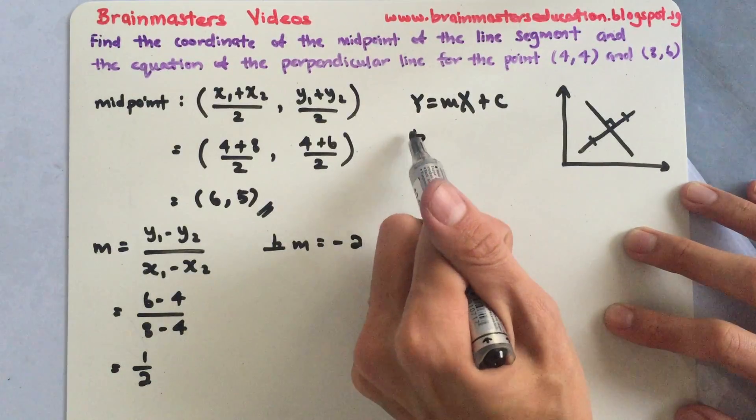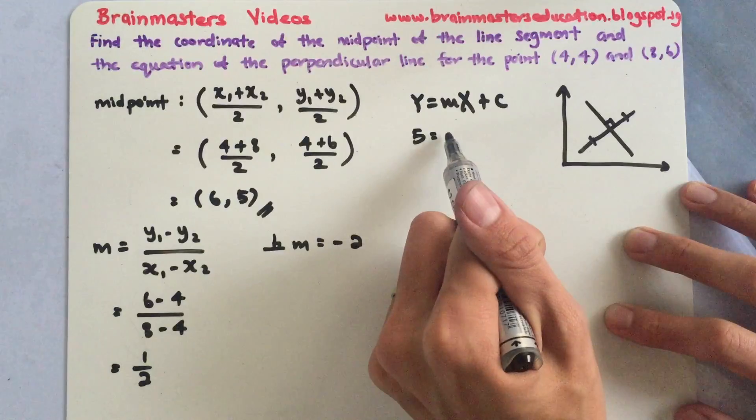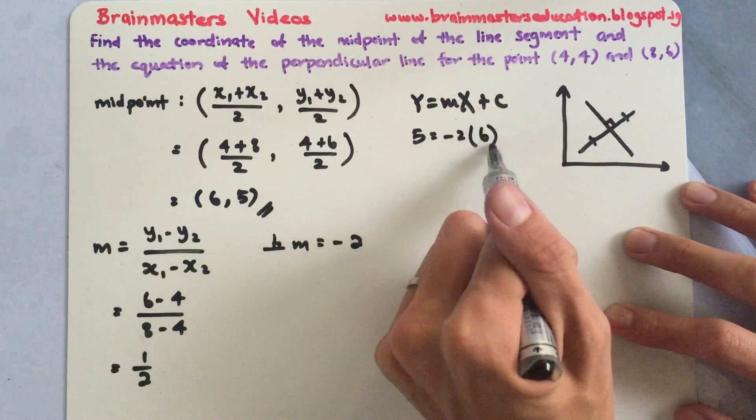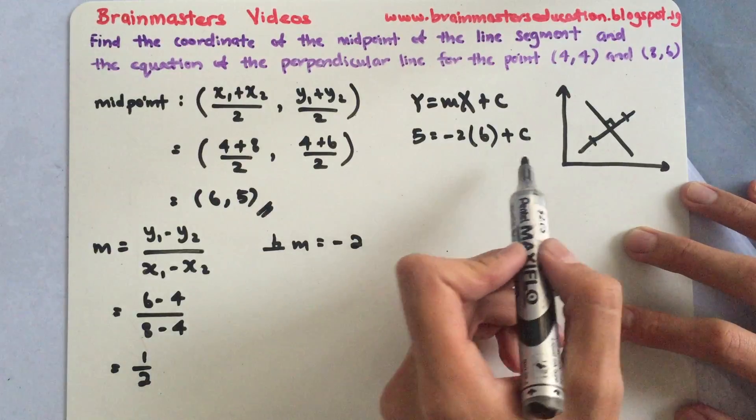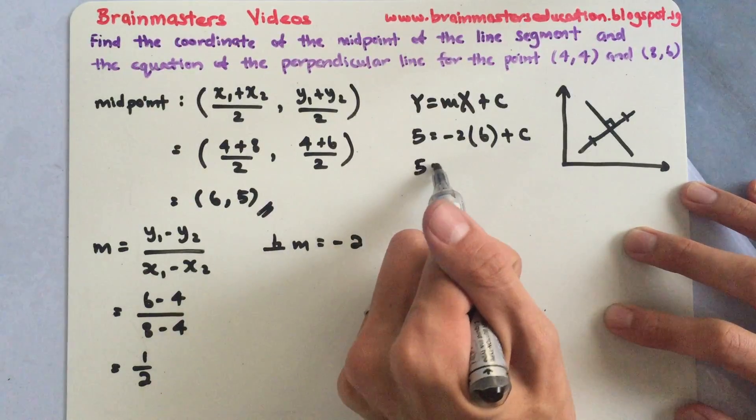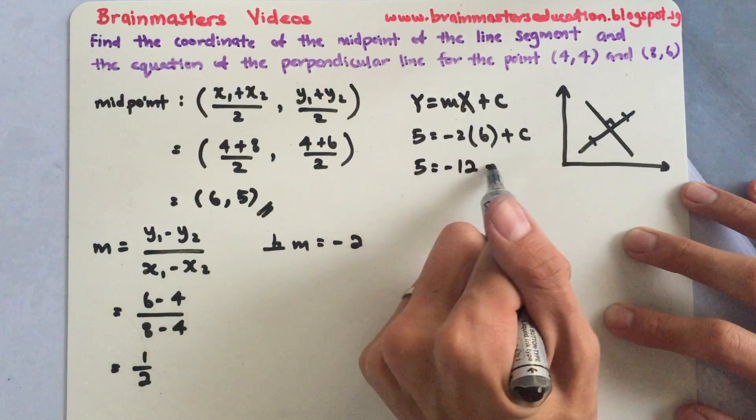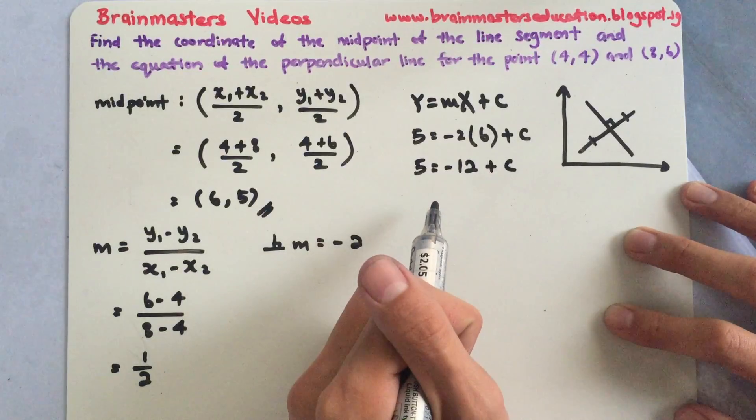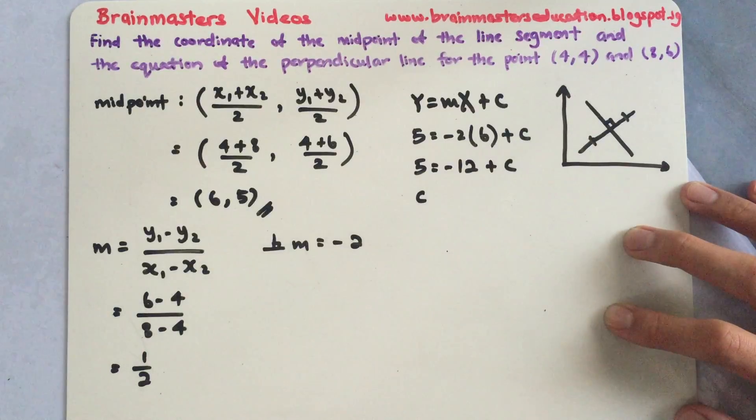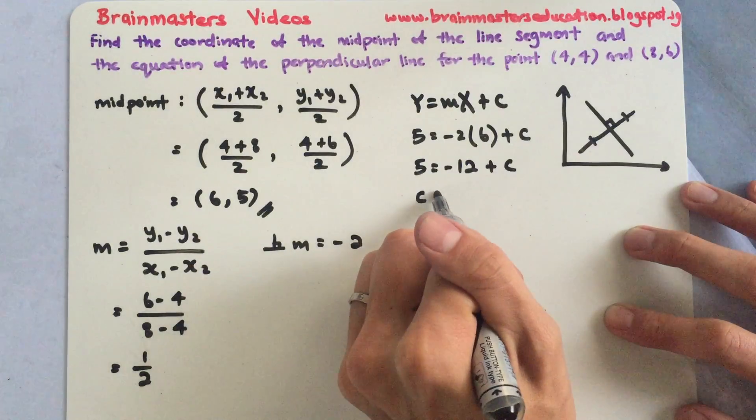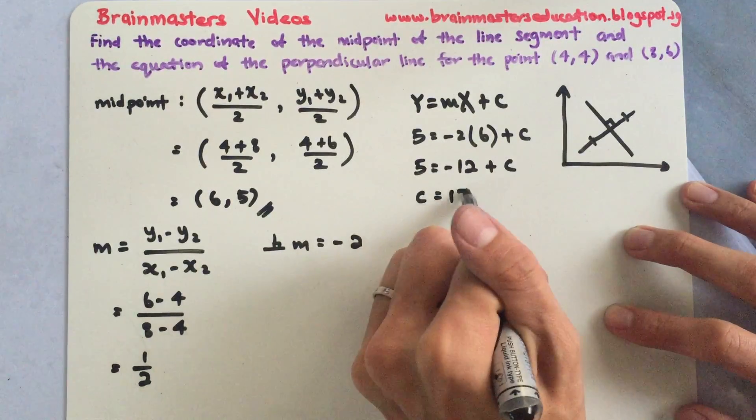So 5 equals negative 2 multiplied by 6 plus c. This is to let me find my c. So 5 equals negative 12 plus c. My c will be... bring it over, 17.